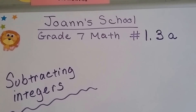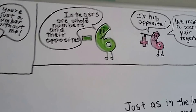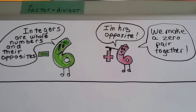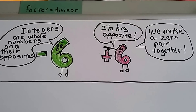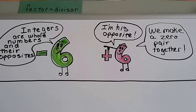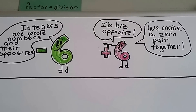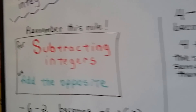Grade 7 math, number 1.3a: subtracting integers. We're going to do a real quick review here. An integer is a whole number, it's a counting number, and its opposite. If it's a negative 6, its opposite is positive 6. When we add them together, they make zero pairs. Alright, so please remember this rule.